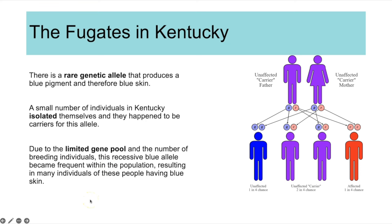An example of the founder effect is the Fugates in Kentucky, who isolated themselves to a particular area. Some individuals who migrated carried a rare recessive allele coding for blue skin when homozygous. Because of the limited gene pool and small breeding population, that recessive blue allele became quite frequent, resulting in many individuals in that population having two copies of the allele and therefore having blue skin.